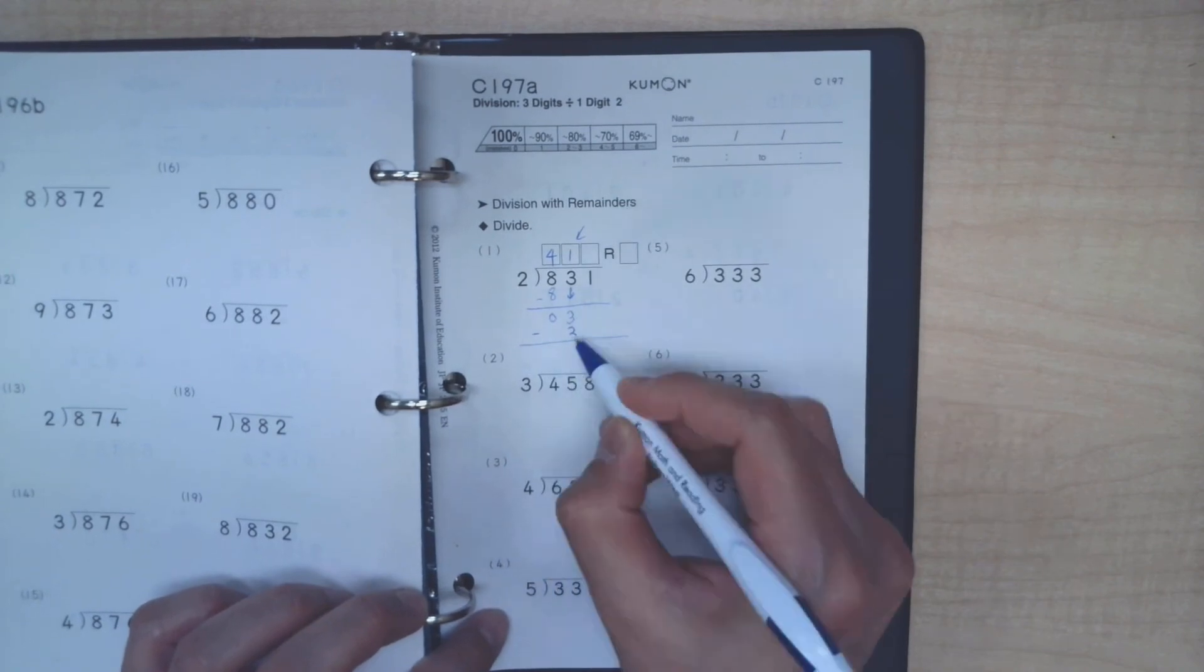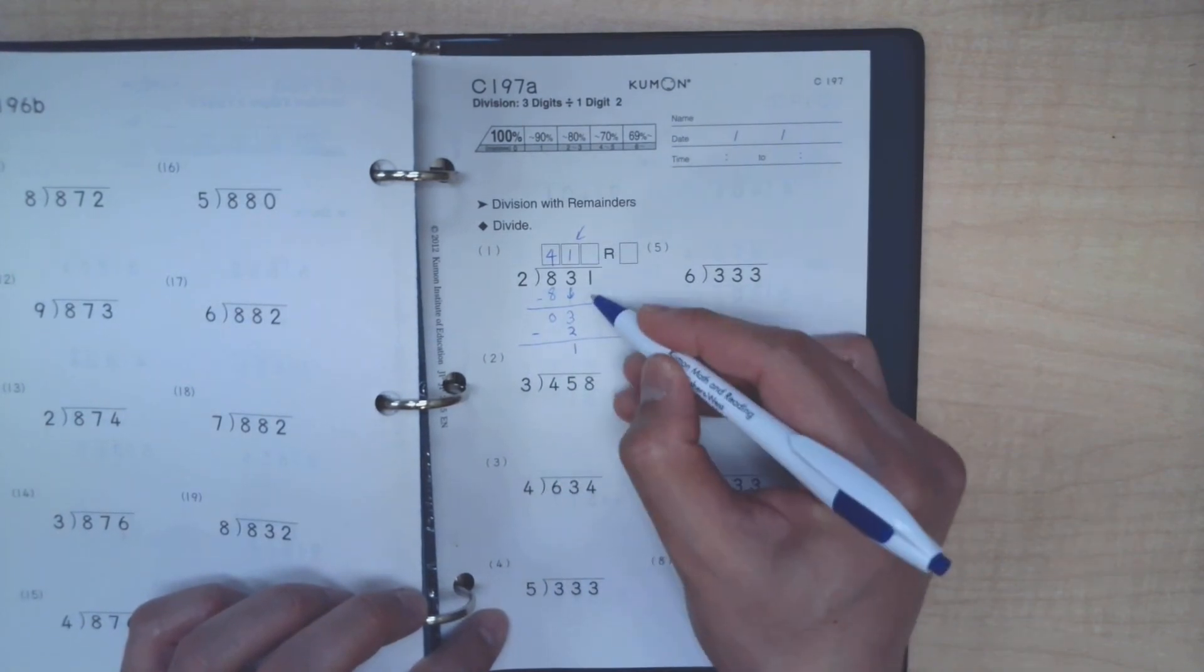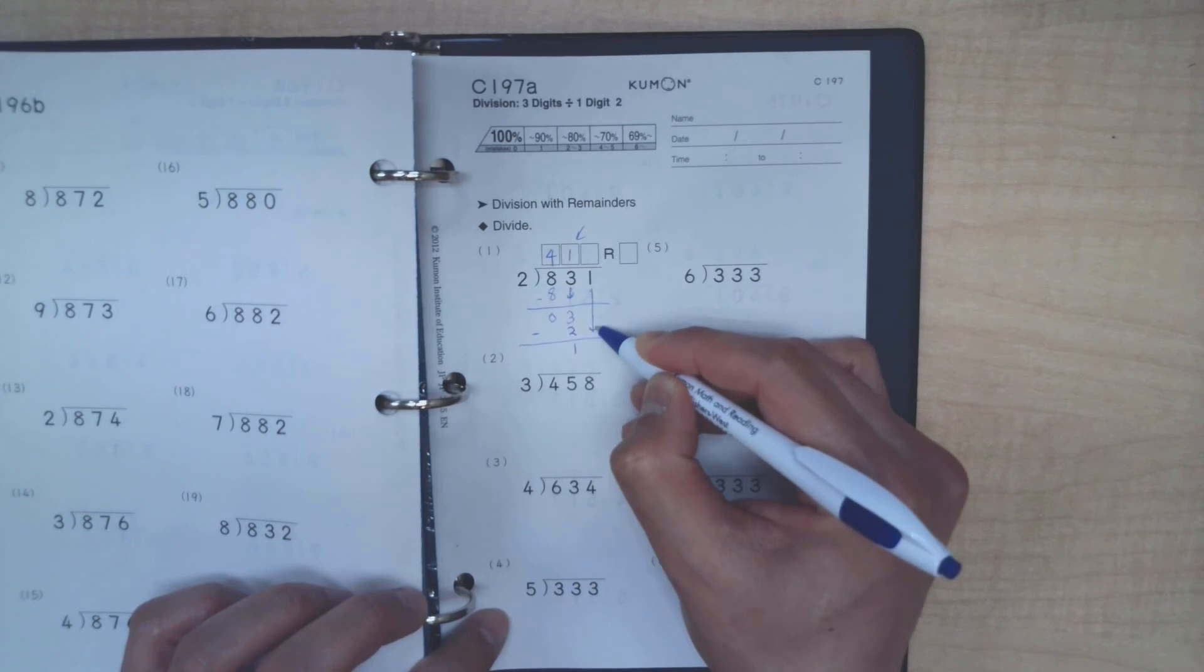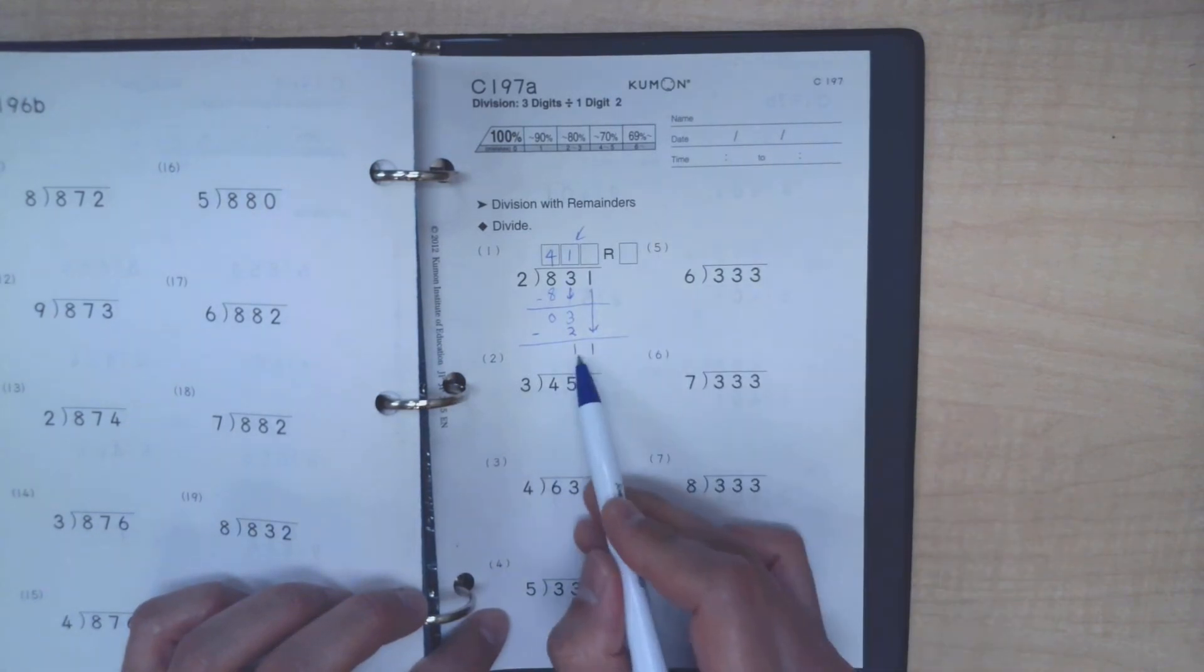Let's do our subtractions again. 3 minus 2 is 1. We still got one more spot to work with, so we would have to bring this 1 down to form 11 there.